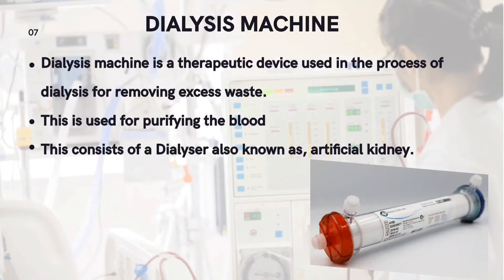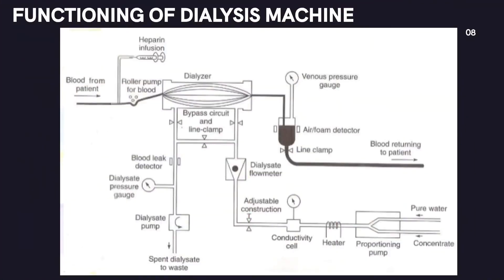What is a dialysis machine? A dialysis machine is a therapeutic device used in the process of dialysis for removing excess waste and purifying the blood. It consists of a dialyzer, also known as an artificial kidney — a semi-permeable membrane containing dialysate, a mixture of water and electrolytes. Blood is removed from the patient through a catheter, purified in the dialyzer, and pumped back. Excess urea and salt are removed, and an anti-coagulant heparin injection is present to prevent blood clotting.